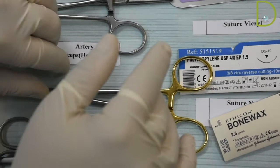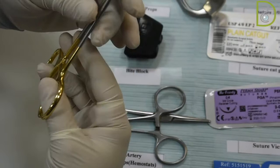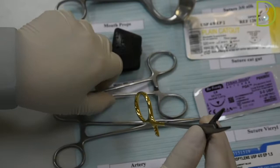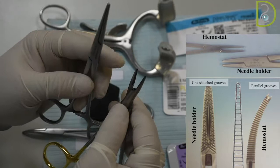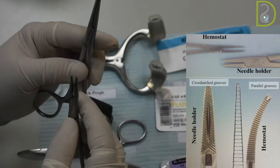Needle holders also have the same lock. You can use them. The difference between the needle holder and the artery forceps is quite evident. As you can see here, the beaks are short in the needle holder, while the beaks are very long in the artery forceps.